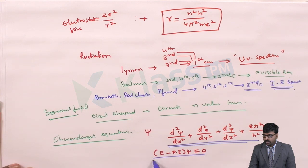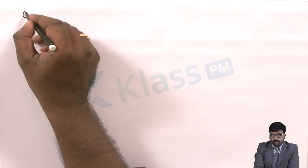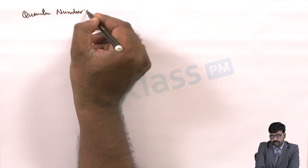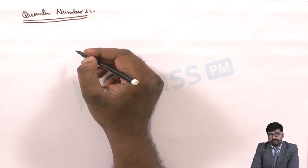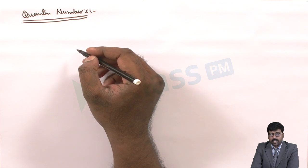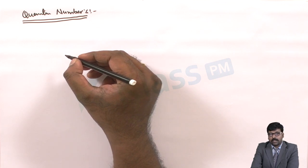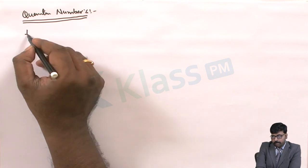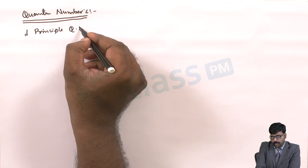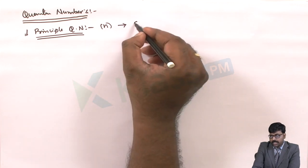All these are the introductory parts to understand how the atom is structured and what is present inside it with respect to electrons and protons. To locate where exactly the electrons are and what the electrons do inside the atom around the nucleus, quantum numbers help us. The first quantum number is the principal quantum number.